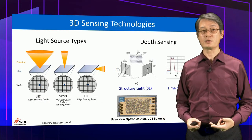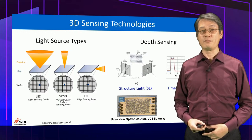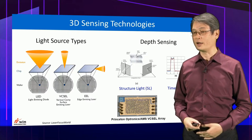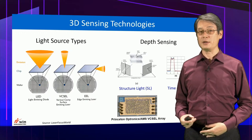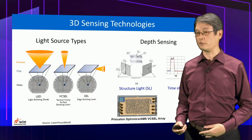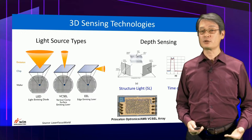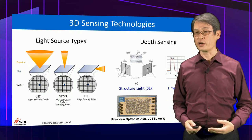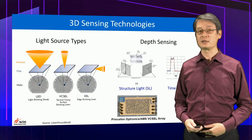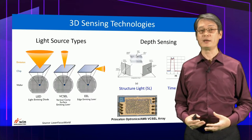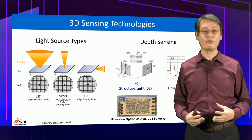There are two depth sensing methods: structured light and time of flight. Time of flight is more intuitive, measuring the flying time and phase shift of reflected light to determine distance. Structured light projects a predefined dot pattern onto the object. By measuring the pattern distortion and through complicated calculations, we are able to determine the object's 3D profile accurately.